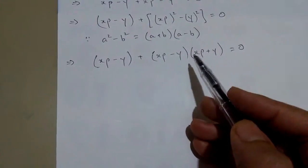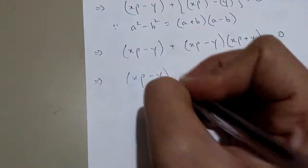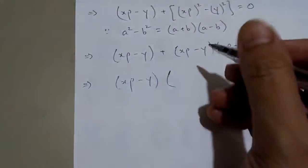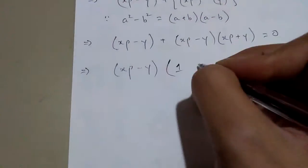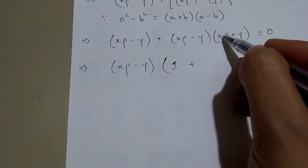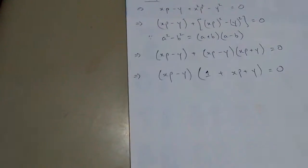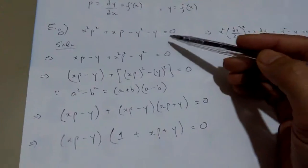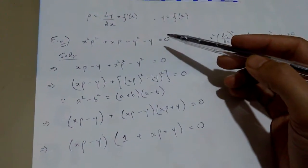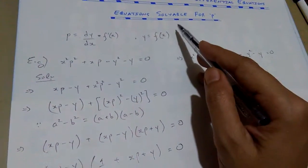Now you can see that xP minus y is common in both terms, so I take it out. What remains is: xP minus y times (1 + xP + y) equals zero. So this equation is factorizable — we have obtained the factors. Once we have succeeded in finding the factors, we can easily solve this equation through the method of P.